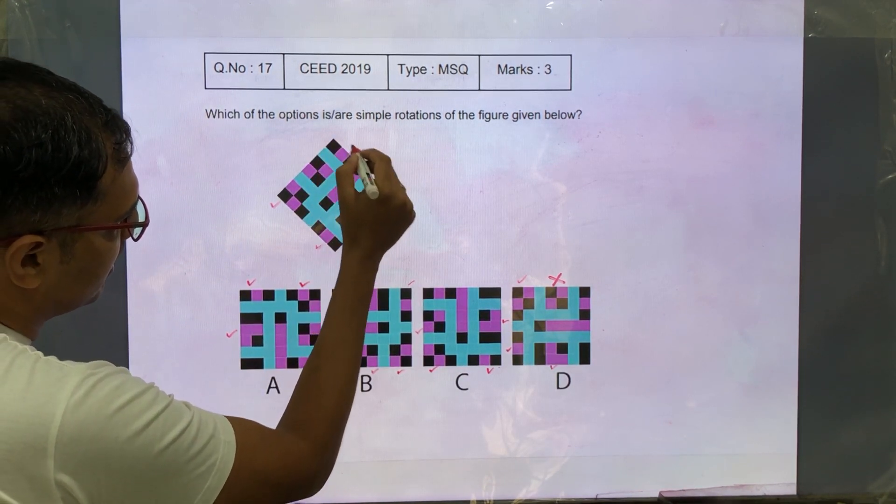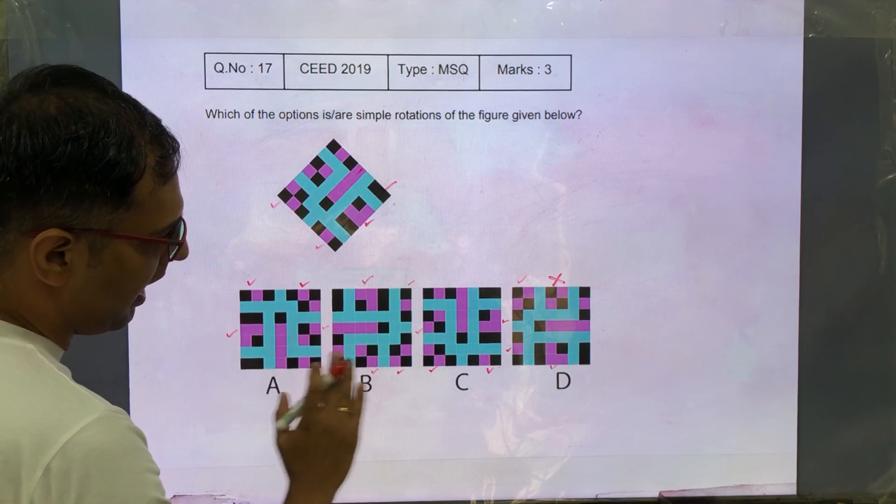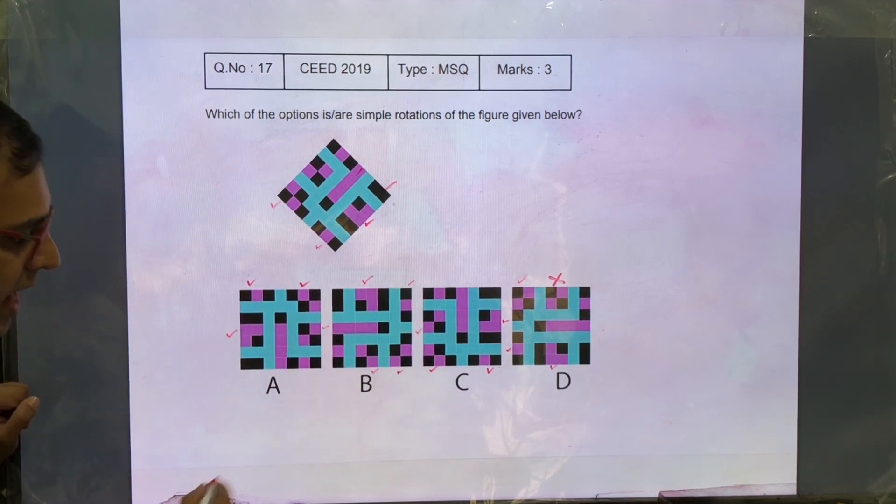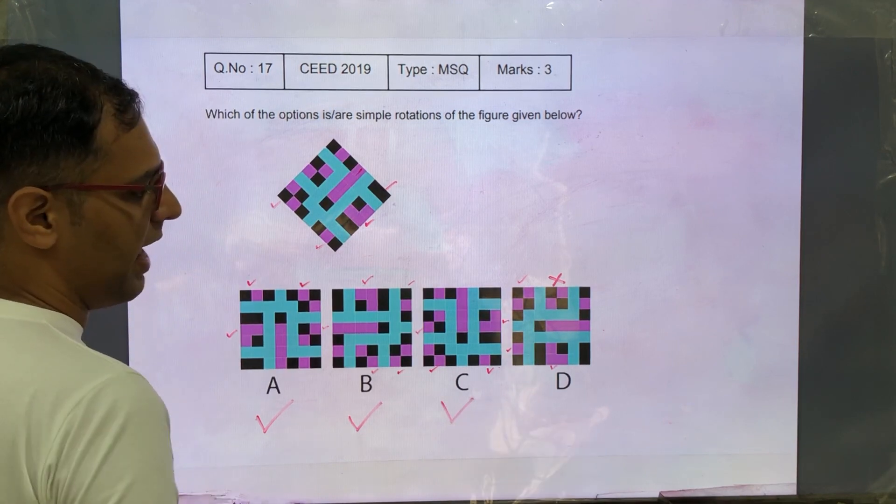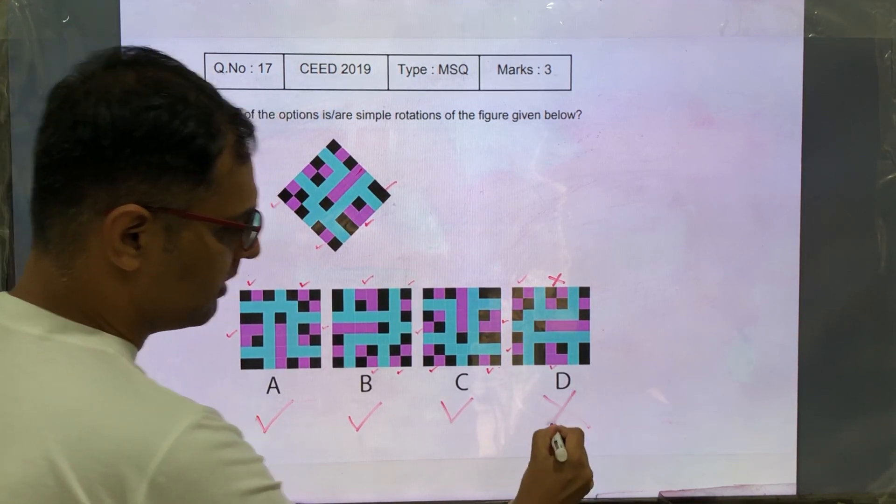Now the last piece is these 3, which we will find are correct in ABC. And hence, A, B and C is the right answer. D is inverse. Thank you.